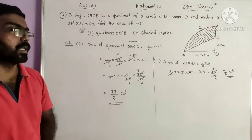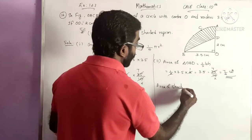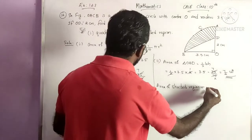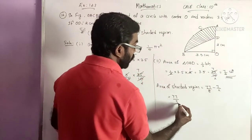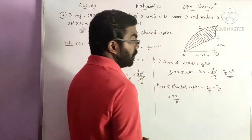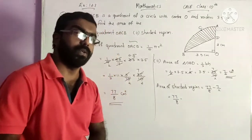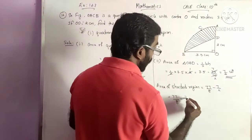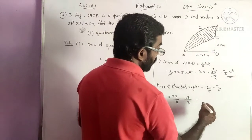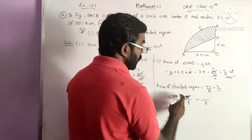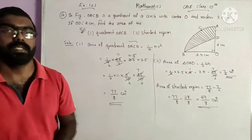We subtract to get the area of the shaded region. Area of shaded region equals area of quadrant minus area of triangle, that is 77 by 8 minus 7 by 2. Making the denominator 8 by multiplying numerator and denominator by 4: 7 times 4 equals 28, giving 28 by 8. Then 77 minus 28 equals 49, so the area of the shaded region is 49 by 8 cm square.